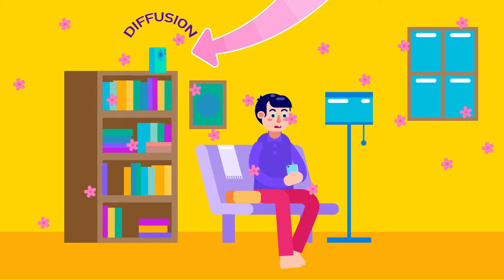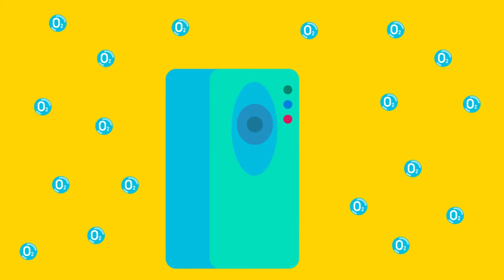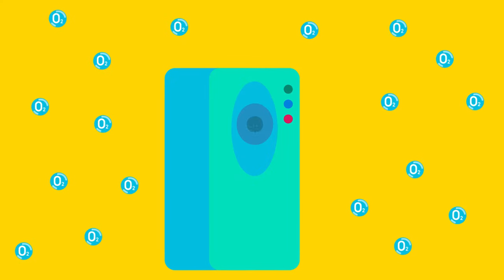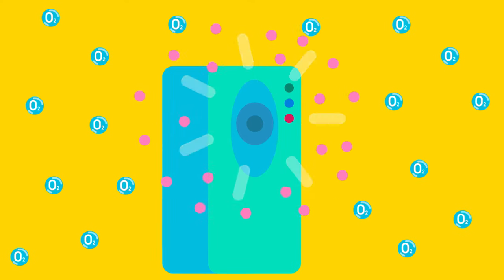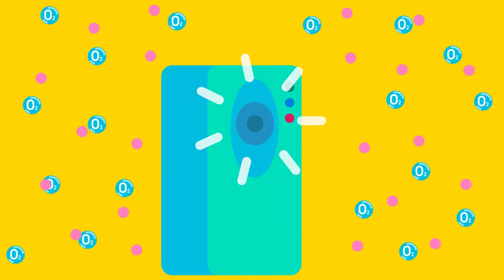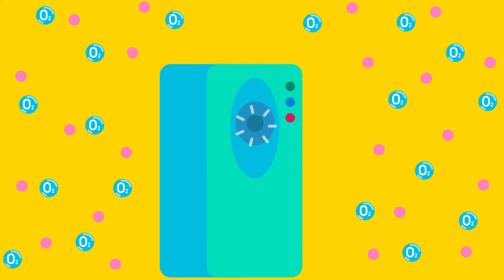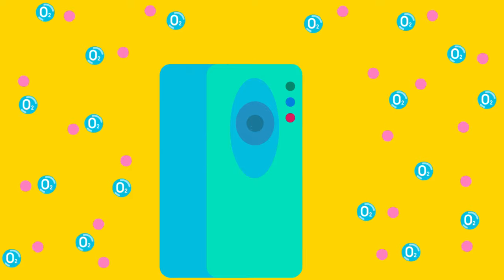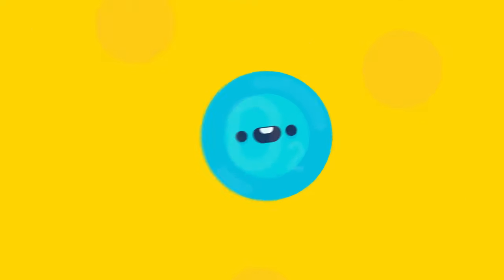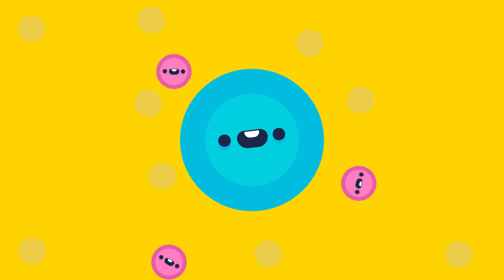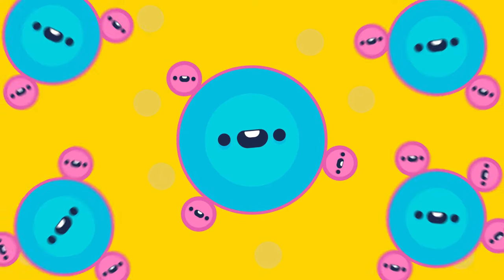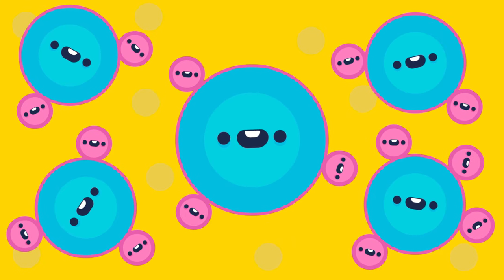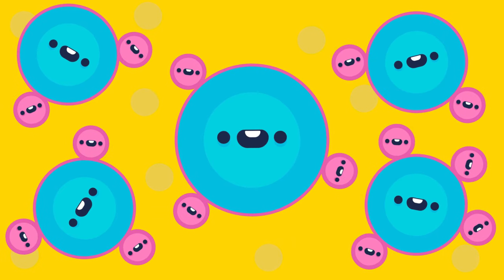Diffusion is the kind of transport in which dissolved substances or particles move from a region of higher concentration to lower concentration, with no external energy involved. Since this transport does not require energy from an external source, it is also called passive transport.